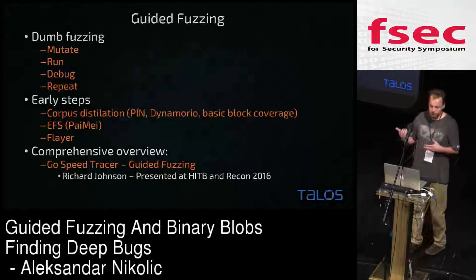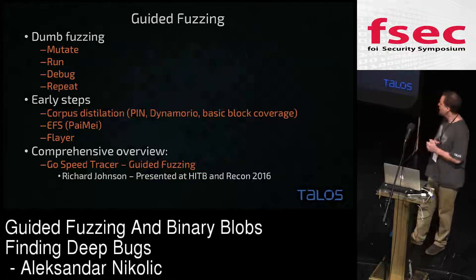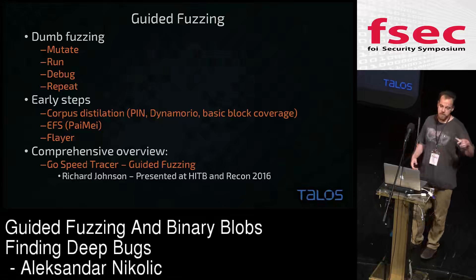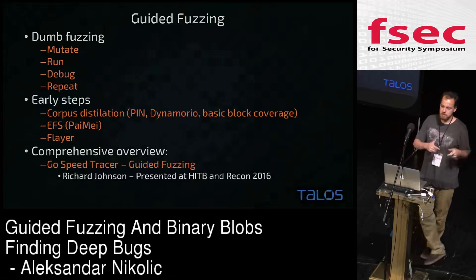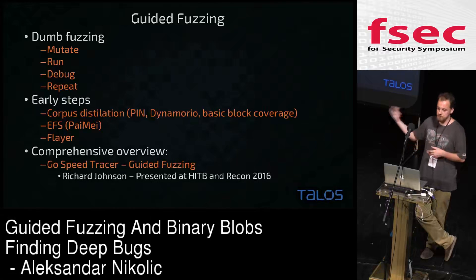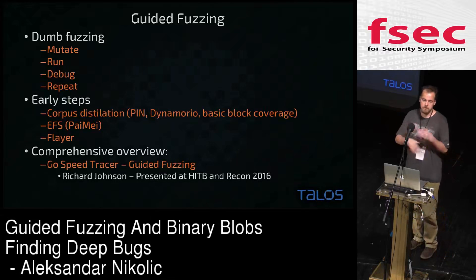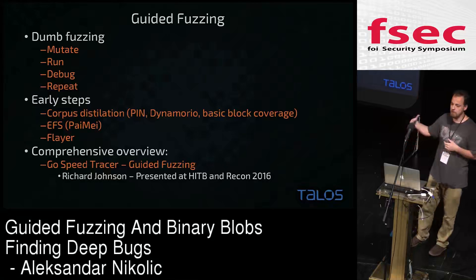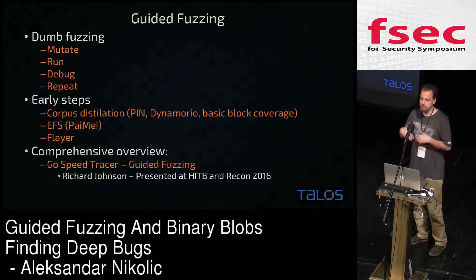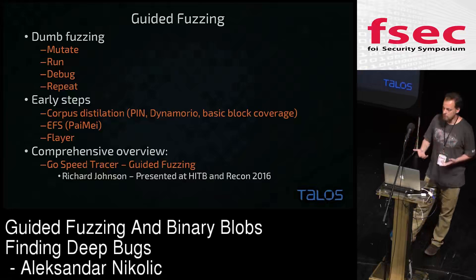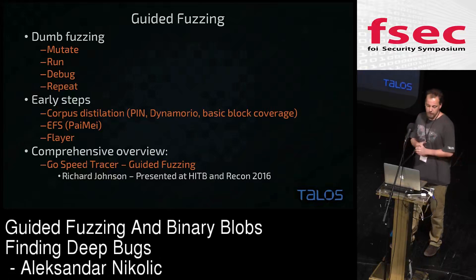Starting with guided fuzzing versus dumb fuzzing. Dumb fuzzing is where you just take a sample, mutate it in some way, throw it against the target, and see if it crashes — doing that ad infinitum. You don't have any feedback from the application to see if you're advancing in any way, or when you should actually stop doing whatever you're doing.